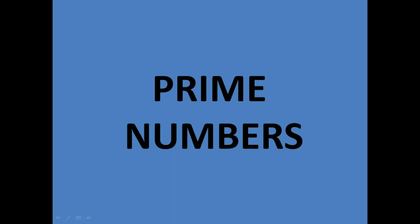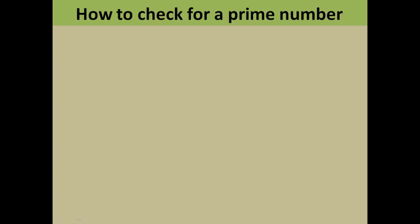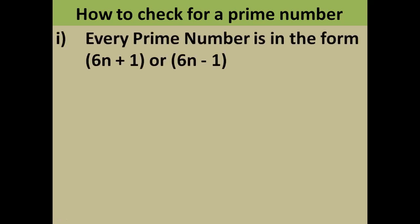Hello friends, welcome to your channel Revealed A to Z. In this video I'm going to tell you how you can find out whether a number is a prime number or not. The method is very simple: every prime number is in the form of 6n plus 1 or 6n minus 1. This is a very peculiar property of each and every prime number.